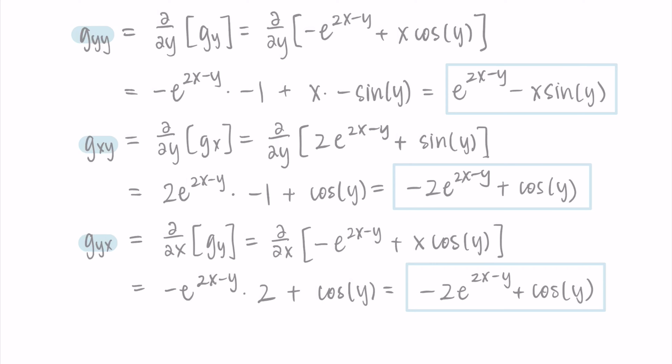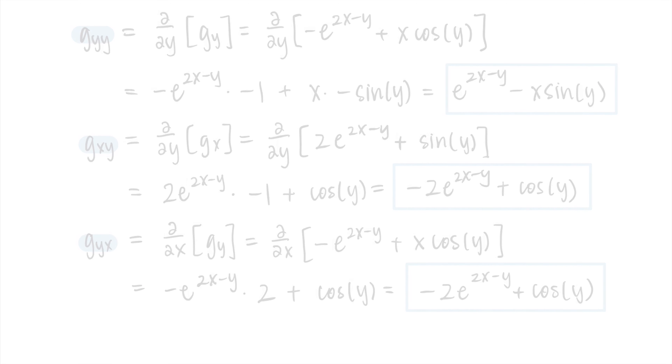So that's the example. We started with the function and found all four second order partial derivatives. Nothing too complicated — just being really careful determining which term is a constant and which is the variable when taking partial derivatives. Thanks so much for watching, and I will talk to you in the next one.